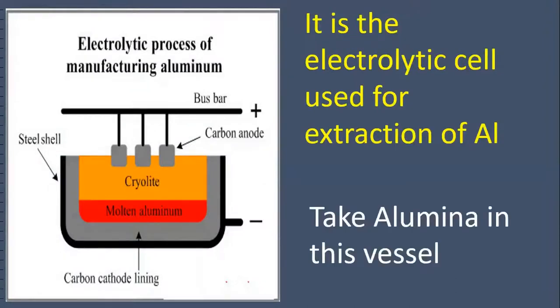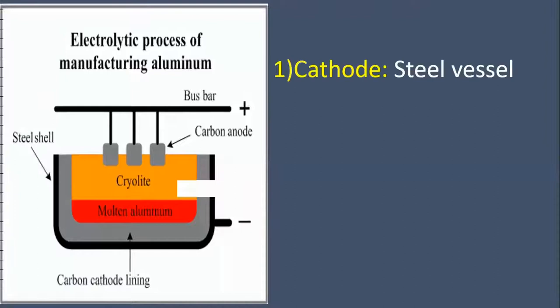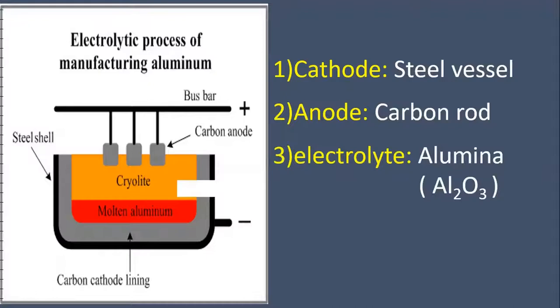Take alumina, Al2O3, in this vessel. What is the cathode? The steel vessel acts like a cathode. Carbon rods placed in the electrolyte act as anode. What is the electrolyte? Alumina, Al2O3.